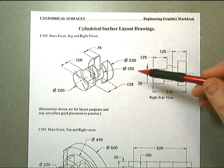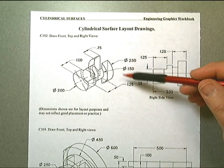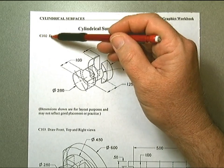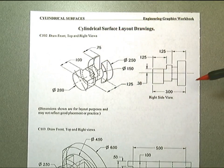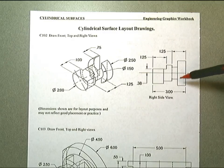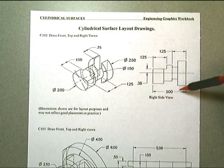I'm requiring you to draw the cylinder C102. You'll create the front, top, and right side views. You've got the right side given to you already.